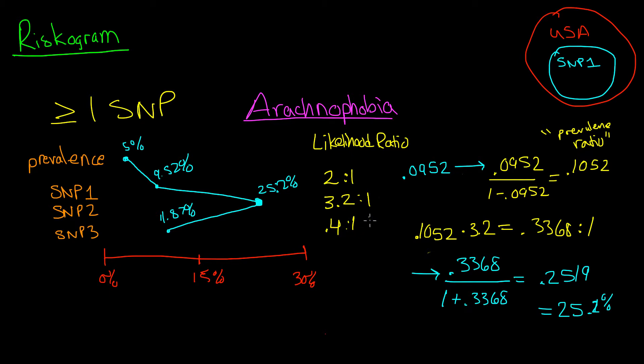That means that more people do not have arachnophobia than people that do have arachnophobia with SNP3. So it makes sense that if you have SNP3, your chances actually go down for having arachnophobia.